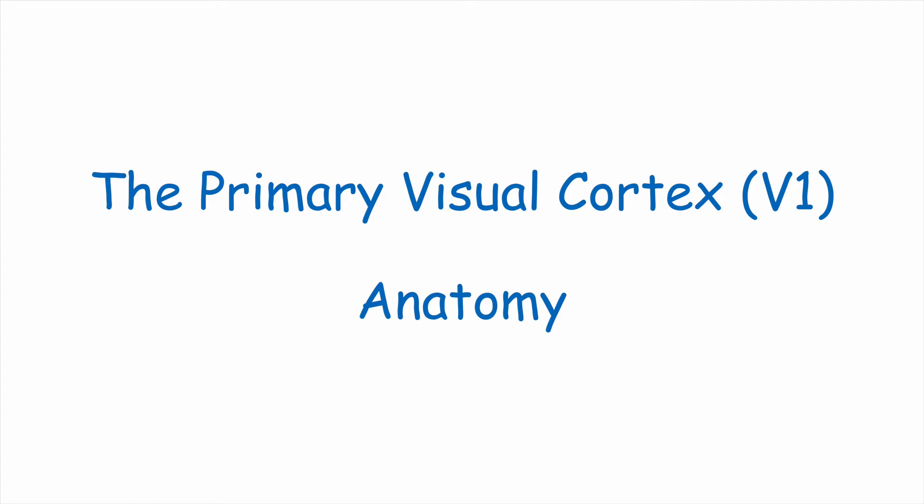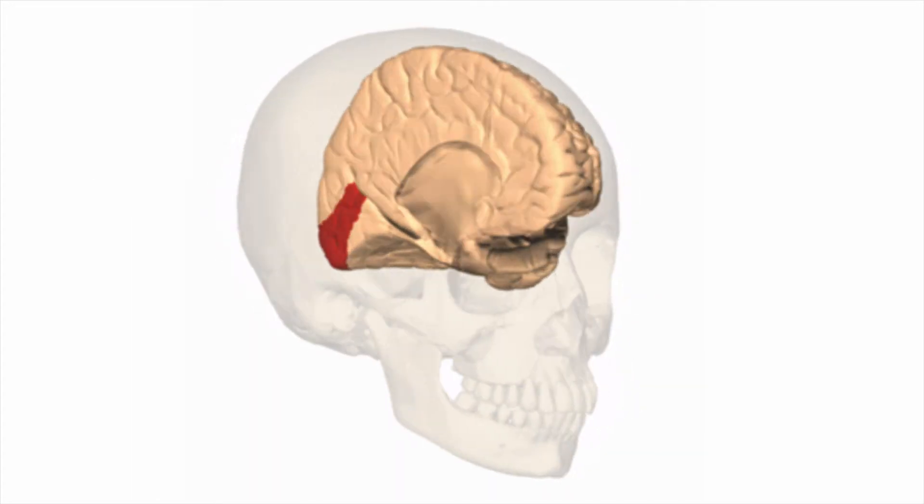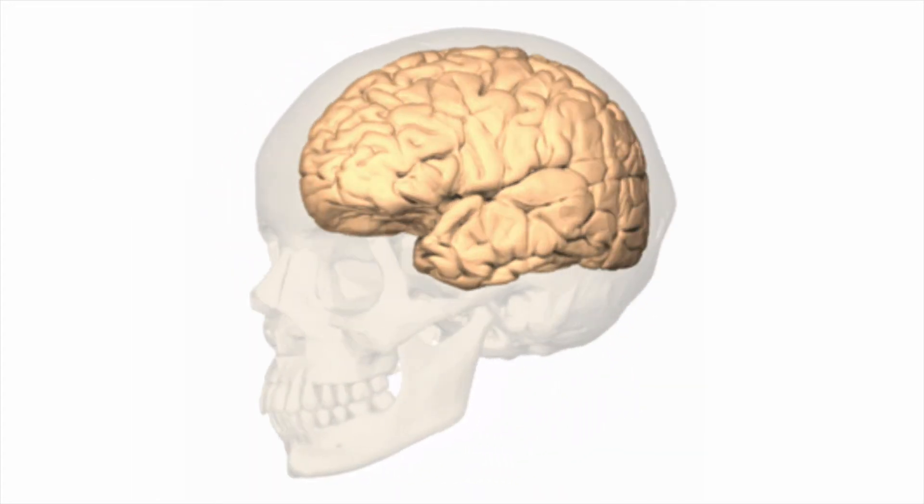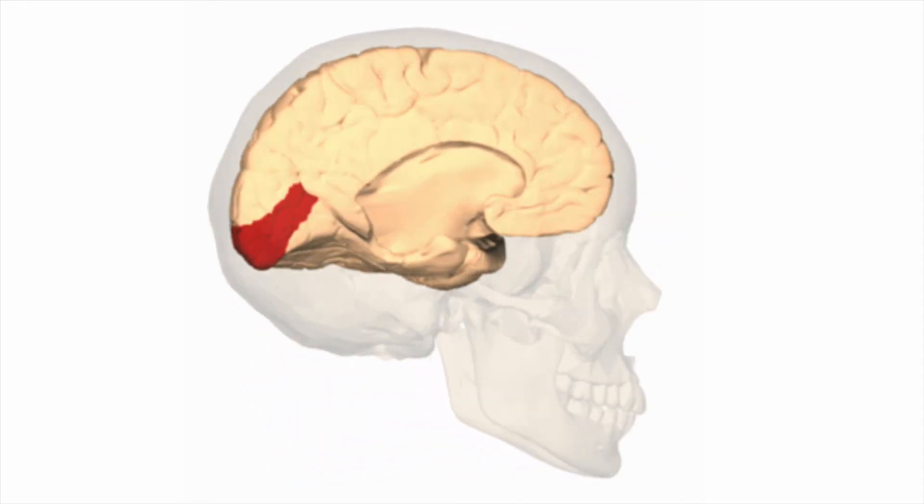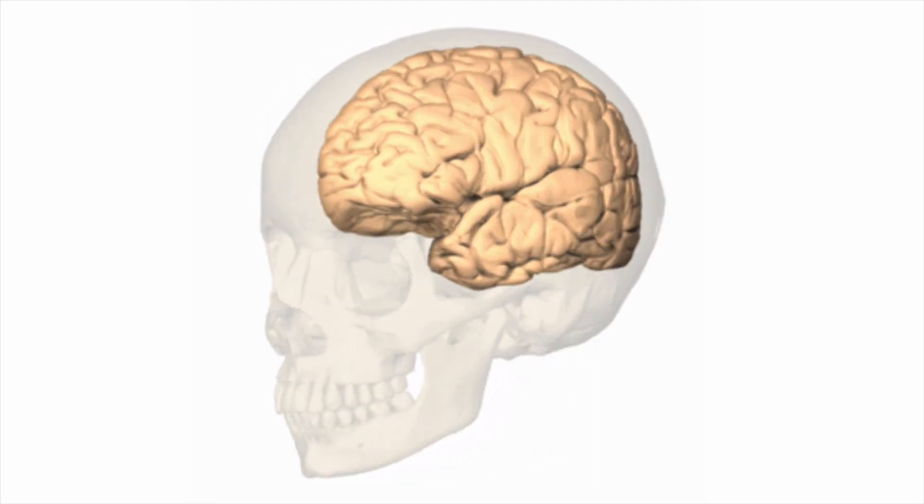Let's start with its anatomy. The primary visual cortex, or area V1, lies in the occipital lobe at the back of the brain. This is where visual information comes from midbrain regions for further processing.